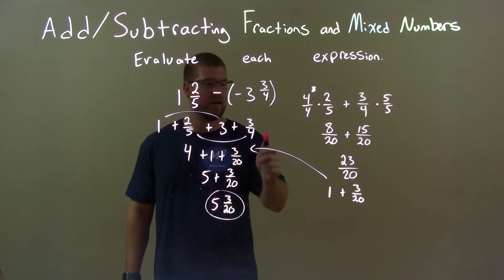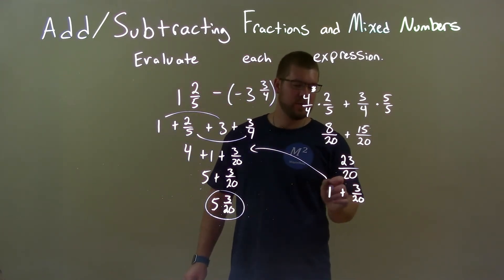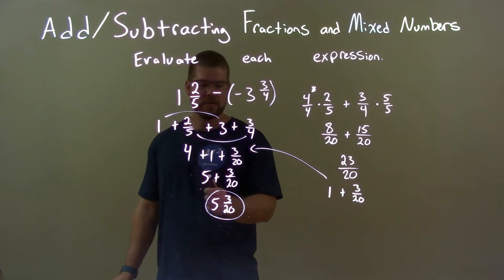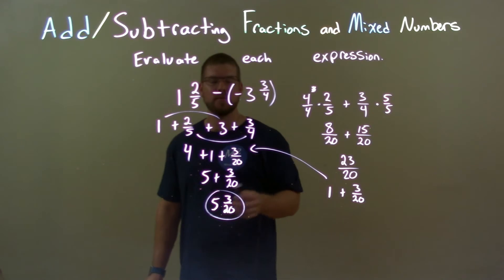I then added the whole numbers and added the fractions and broke those down accordingly. When I got down here, I broke it down to be a whole number and a fraction as well. Brought that over, added the whole numbers, and then I combined the whole number and the fraction, 5 and 3 over 20, to be one number.